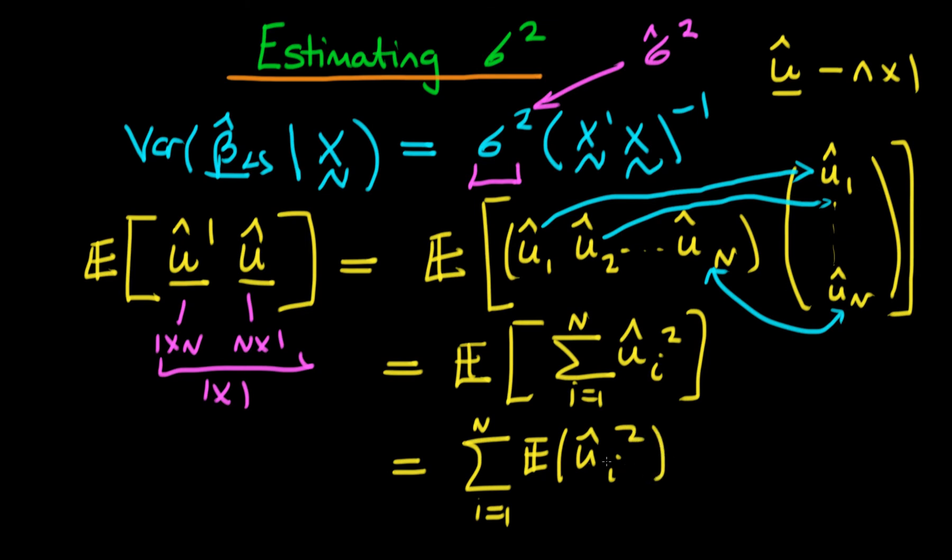And naively you might think that since each of these expectations should contribute sigma squared, we'll just get here n sigma squared, which would mean that a good estimator for the parameter sigma squared would be to take 1 over n times the u hat prime times u hat, and that will be our estimator for sigma squared, which we'll call sigma hat squared.